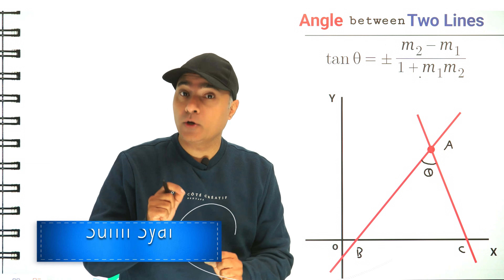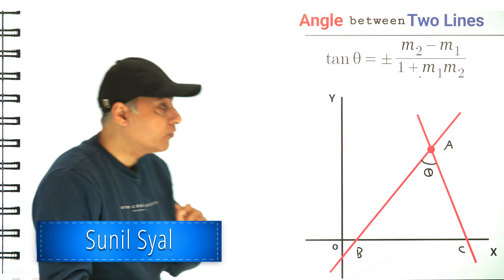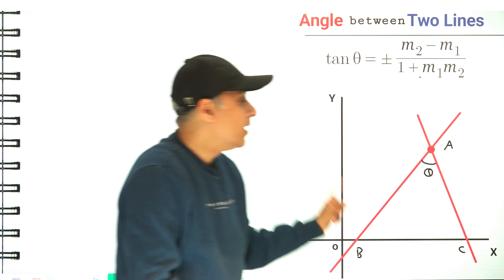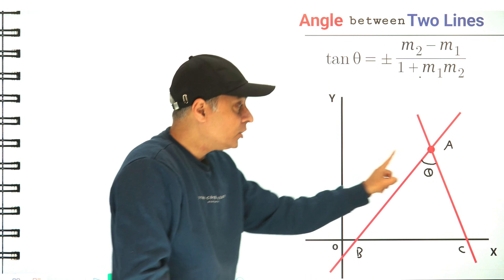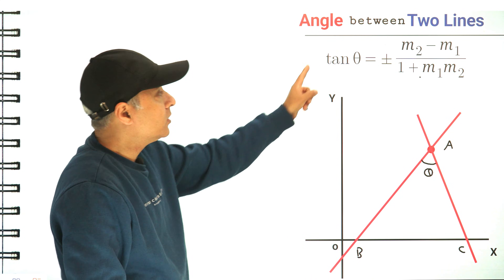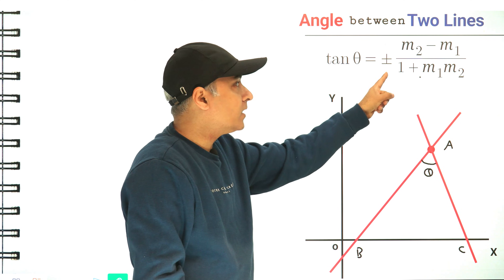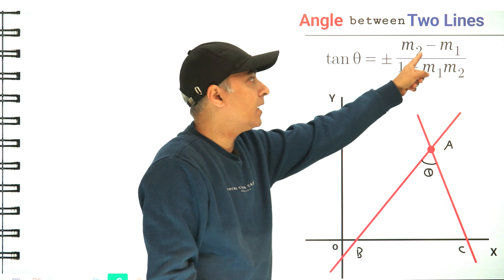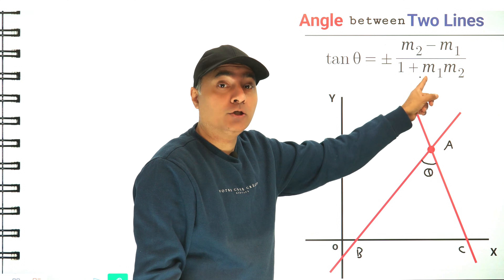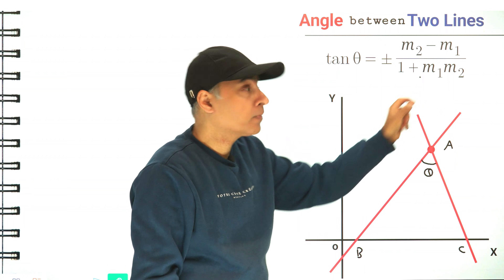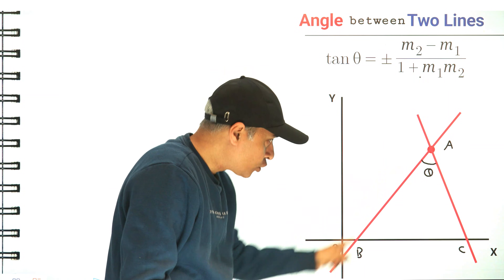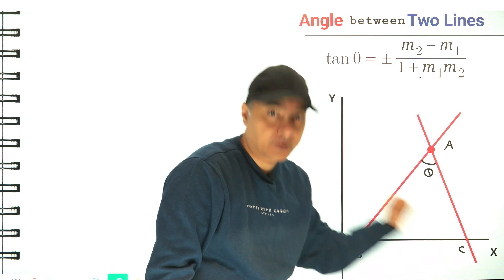In this tutorial we are going to prove that if we have two straight lines that intersect each other at an angle theta, then tan theta is equal to plus minus m2 minus m1 over 1 plus m1 times m2, where m1 and m2 are slopes of these two lines.